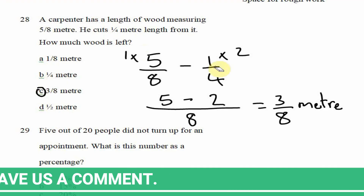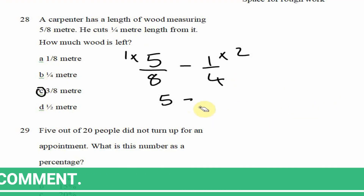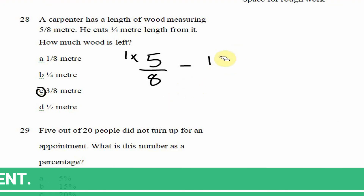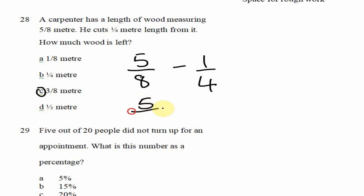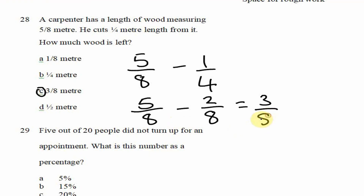I'll also demonstrate using equivalent fractions. We take 5/8 minus 1/4 and rewrite 1/4 as 2/8, which allows eight to be in the denominator. Now five minus two = 3, divided by the common denominator 8. We still get 3/8 meters.